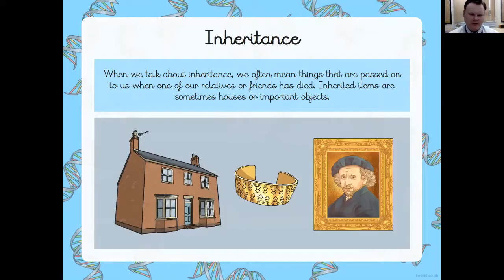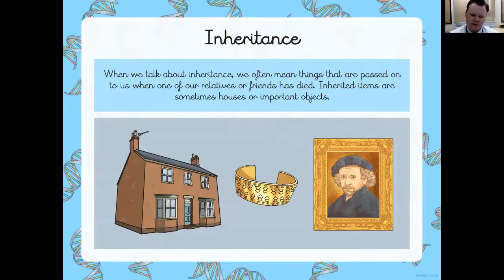When we talk about inheritance, which is a word you may have heard, we often mean things passed on to us when one of our relatives has died — inherited items like houses or important objects. That's where you may have heard that word being used. Very similarly, in science, inheritance refers to things that are passed on.